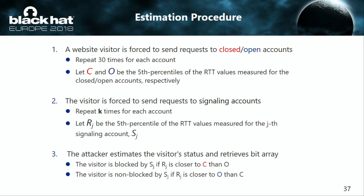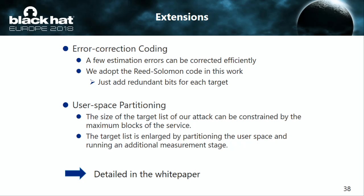I introduce two extensions of the attack. The first is error-correction coding. Our method assigns a bit string to each account, so we can adapt a typical error-correction algorithm. We tried applying the Reed-Solomon code in this work. The second extension is user-space partitioning. The size of the target list can be constrained by the maximum blocks allowed by the service, so the target list is enlarged by partitioning the user space and running an additional measurement stage. The detailed procedure is in our white paper, accessible from the Black Hat website.